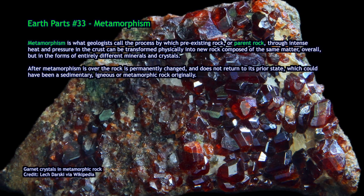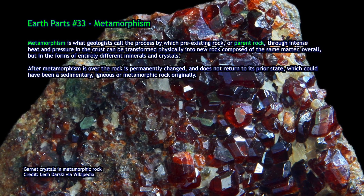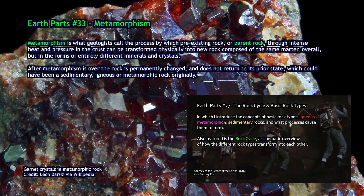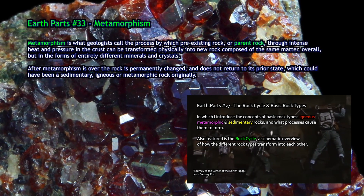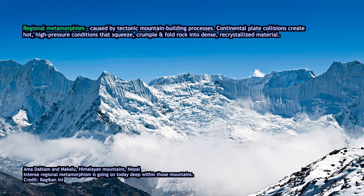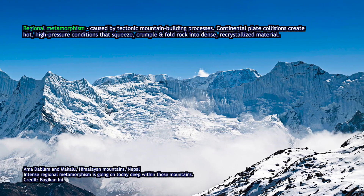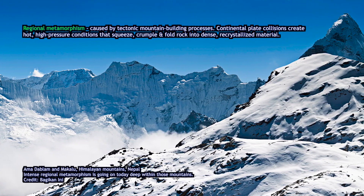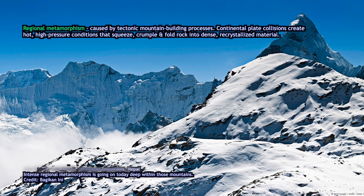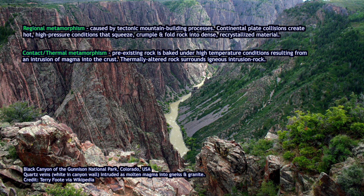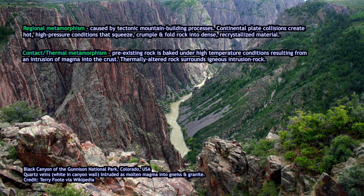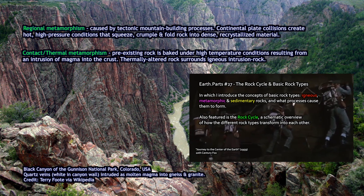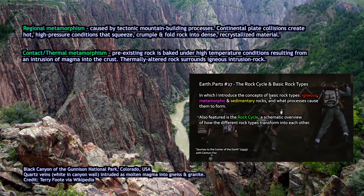Geologic metamorphism is the process by which rocks are transformed by pressures and temperatures that force the minerals in a rock to recrystallize. In Earth Parts episode 27, I introduced the concepts of the rock cycle and of metamorphism, along with regional metamorphism and thermal or contact metamorphism, where regional metamorphism occurs under mountain ranges where two continental plates are grinding together. I also talked about thermal and contact metamorphism that happen when rock is exposed to high-temperature igneous intrusion heat. But now I'm going to build on that and talk about metamorphic rocks, their textures, their types, and how you can identify them.